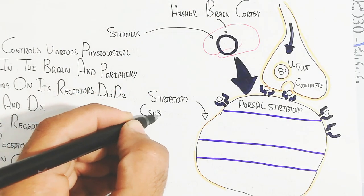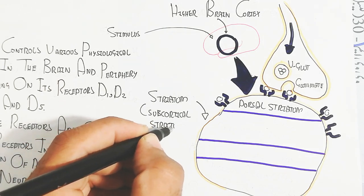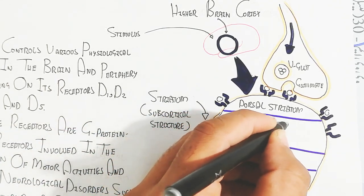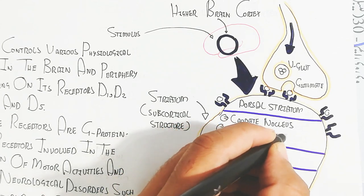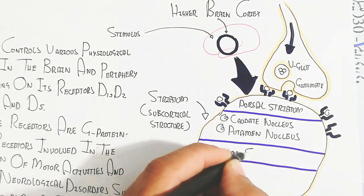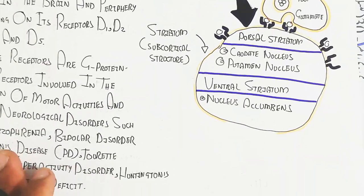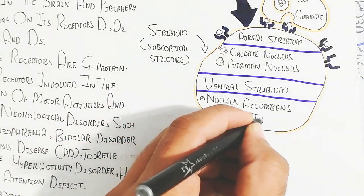Substantia nigra compacta is used for positive feedback. The dorsal striatum contains caudate nucleus and putamen nucleus, while the ventral striatum contains nucleus accumbens and olfactory tubercles.